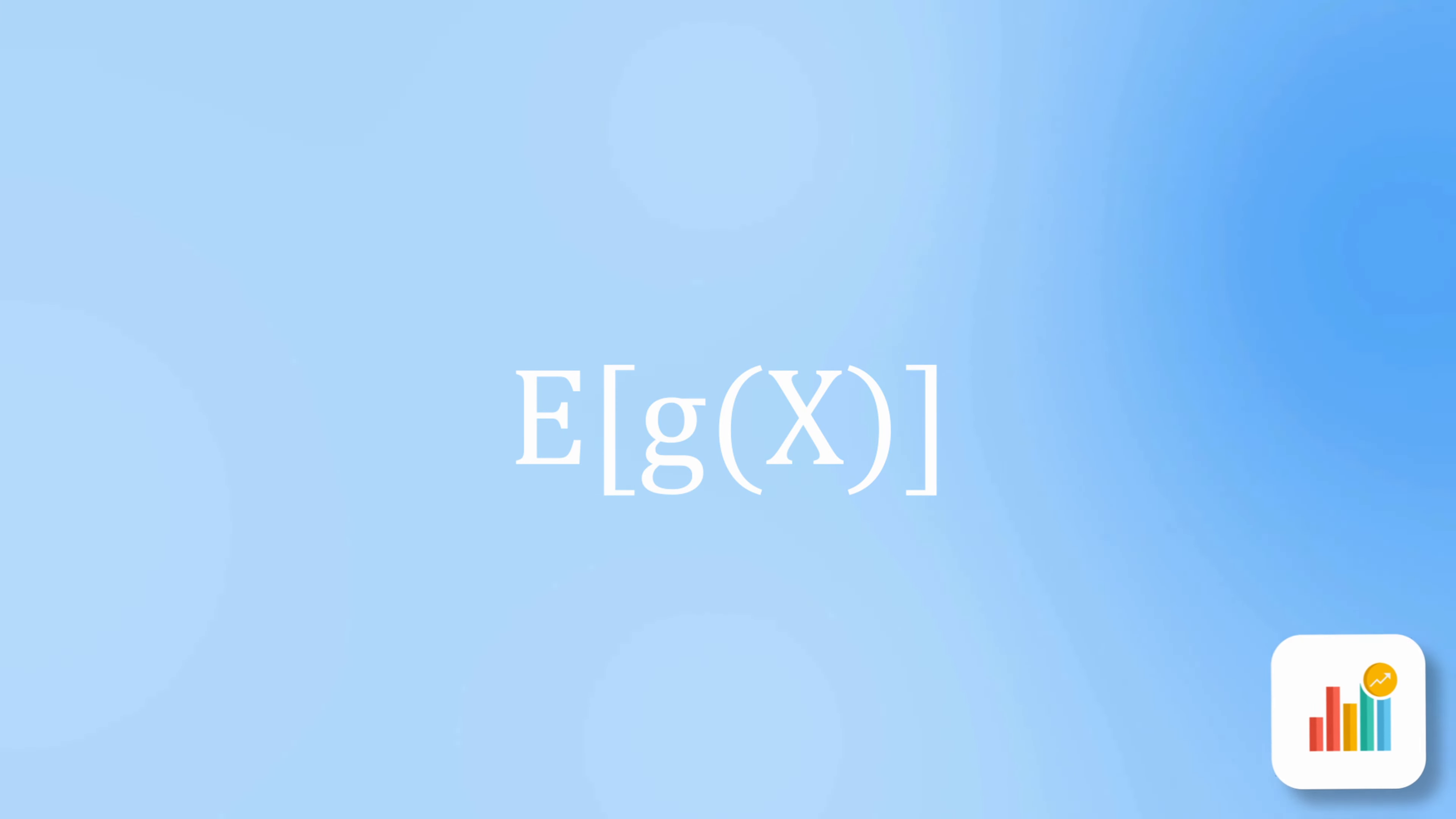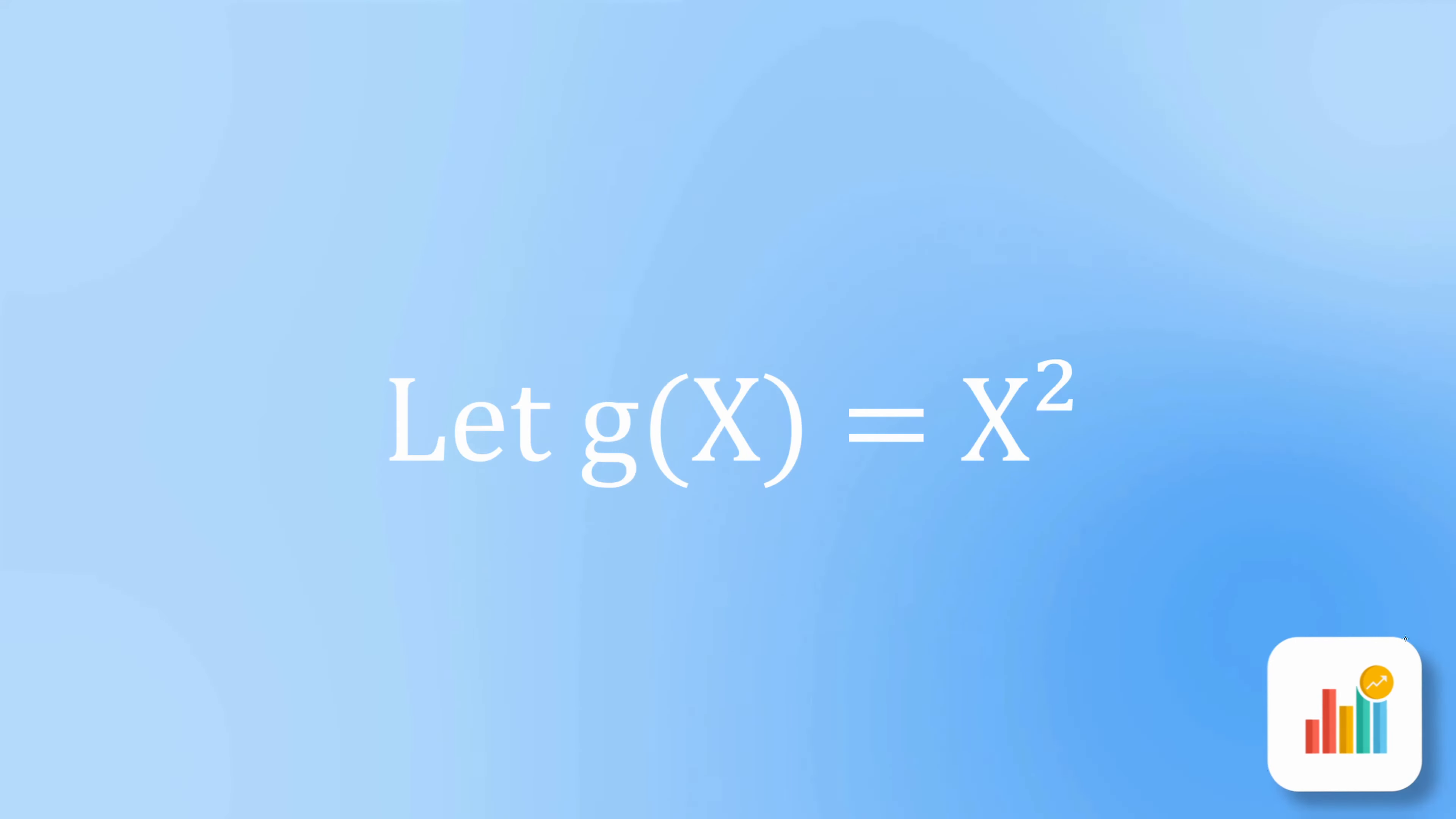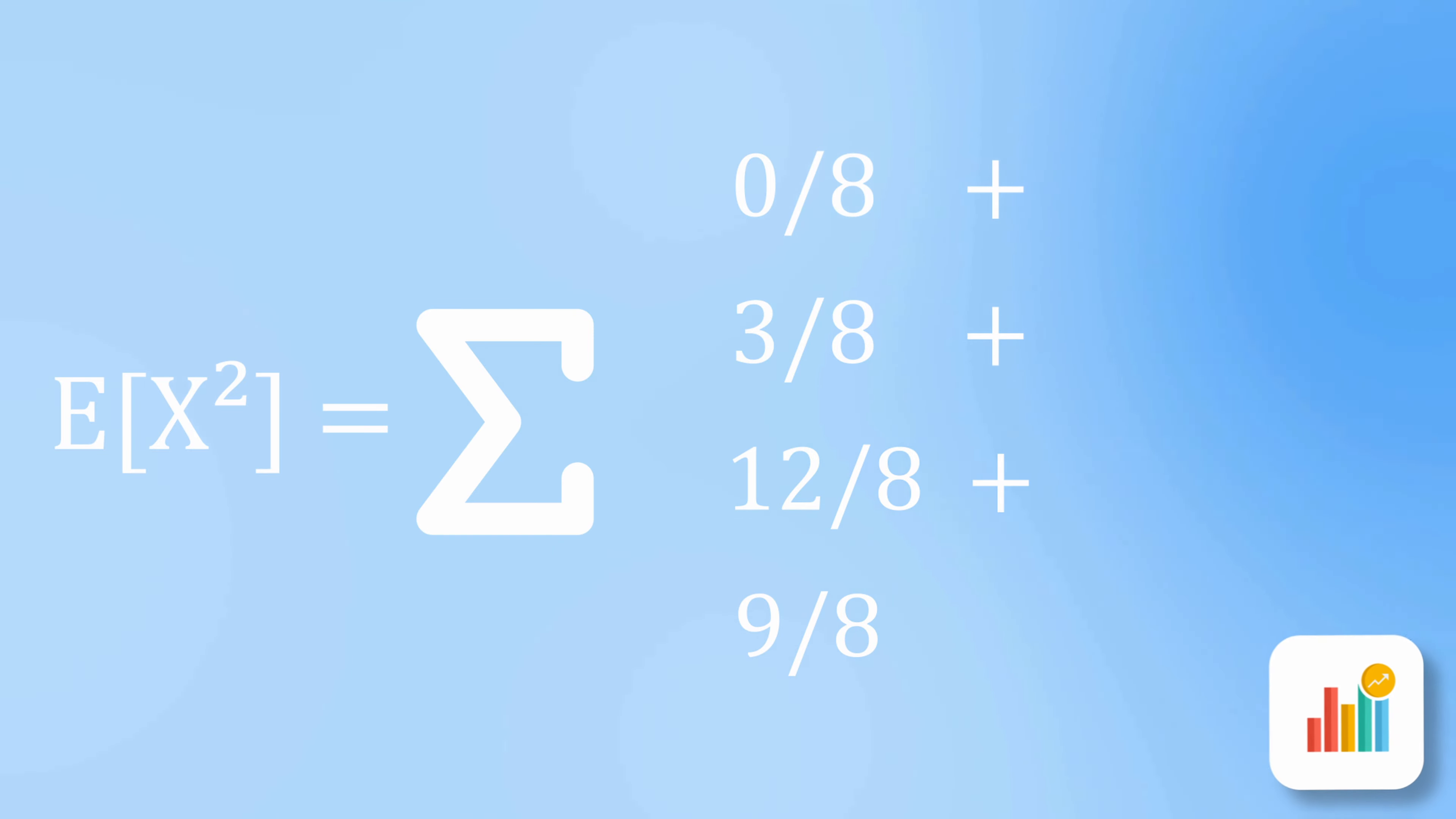We can also take the expectation of a function of a random variable and calculate its value. The methodology is very similar to calculating the expected value of a random variable, but instead of multiplying x by the probabilities, we multiply g of x by the probabilities. If we let the function be x squared, then the first step in calculating E of x squared is to list out the x squared values for each x. From there, we take each x squared, multiply by its associated probability, and sum up the results. This gets us a value of E of x squared equals 3.